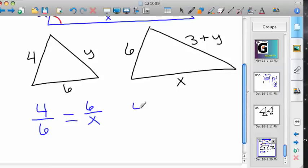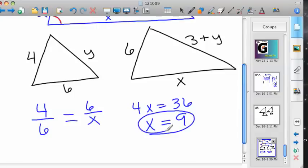So 4x equals 36. Not on my planet. 9, right. So x is 9, unless I set something up wrong, but it looks like that's correct.